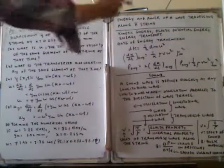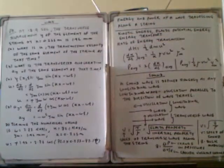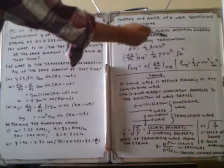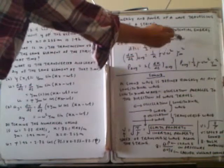The next topic is the energy and power of a wave traveling along a string. When a wave travels along a string, it possesses energy and power — specifically kinetic energy and elastic potential energy, and these energies are transported. The rate of energy transmission can be calculated: dK = ½·dm·u², where dK is the kinetic energy element and dm is the mass element.